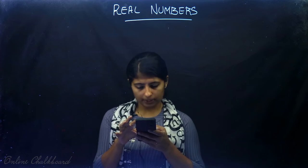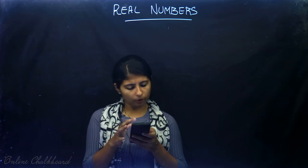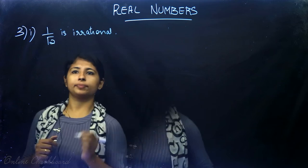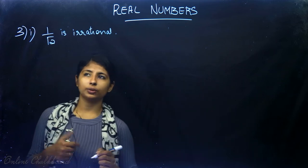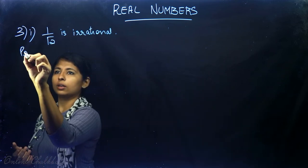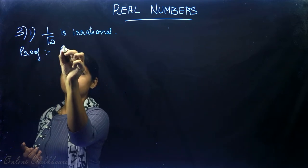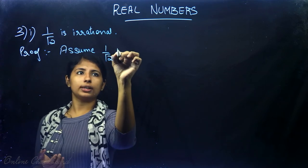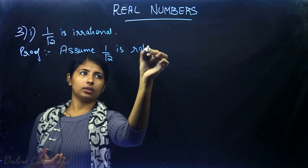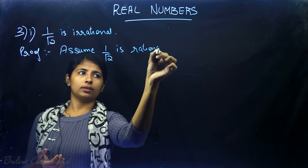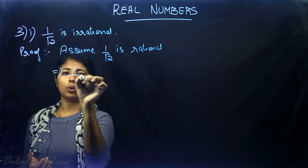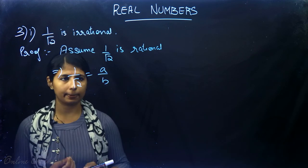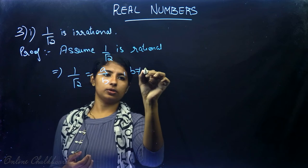Now let's move to question number 3: prove the following are irrational. Part 1: 1/√2. We will use the same proof by contradiction. Assume 1/√2 is rational. Therefore there exist a and b such that 1/√2 can be written in the form a/b, where b ≠ 0.